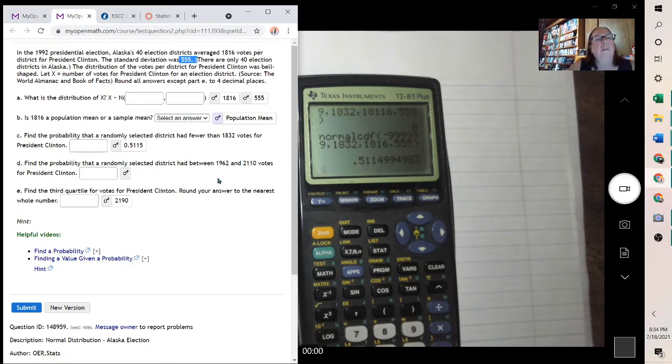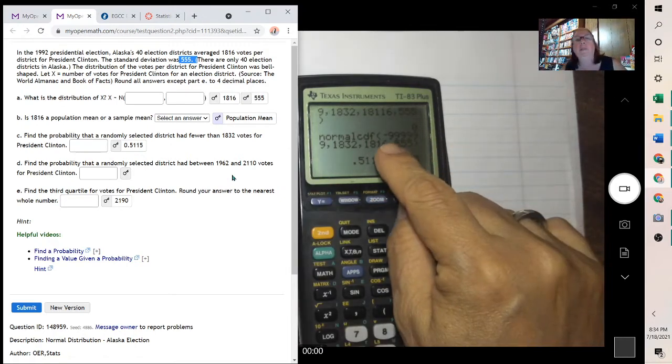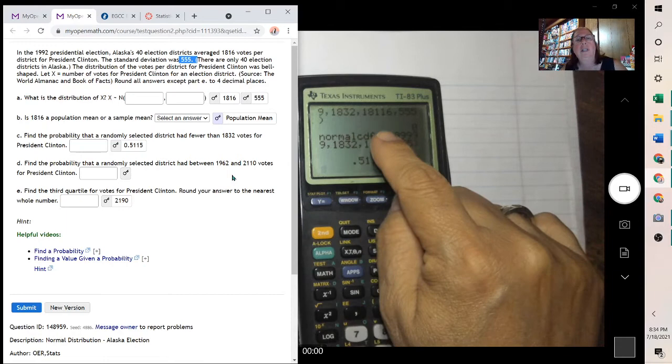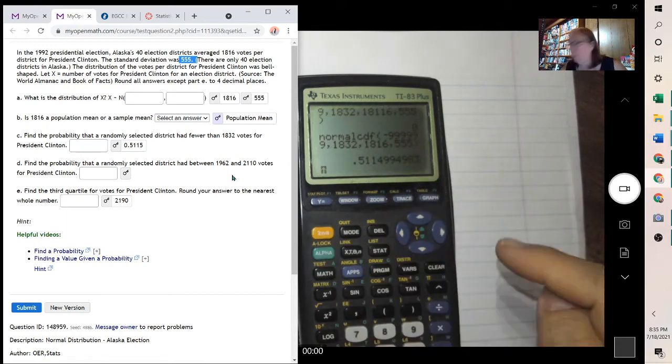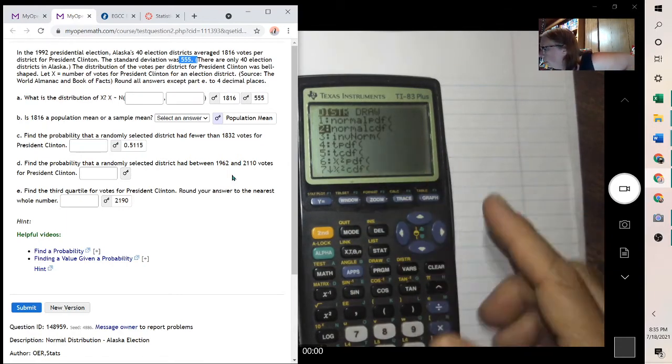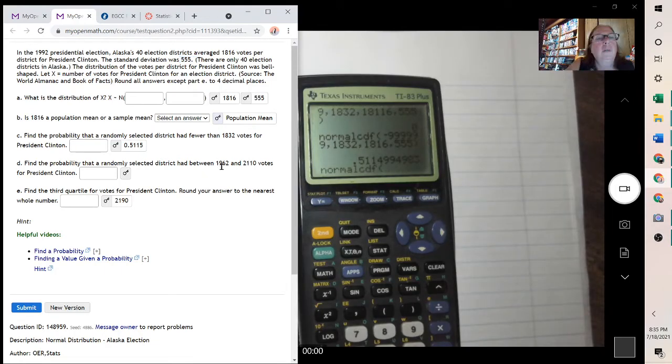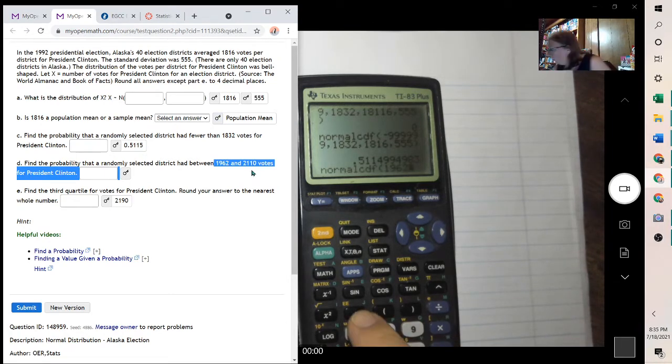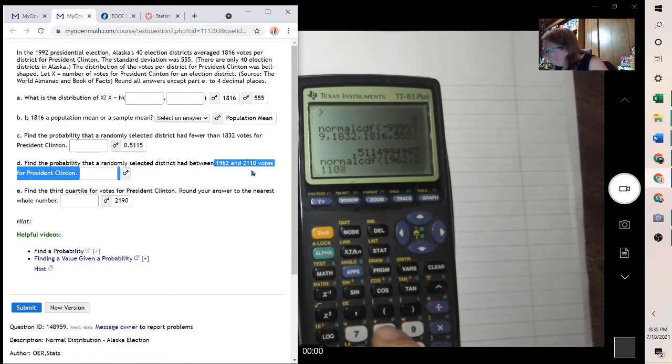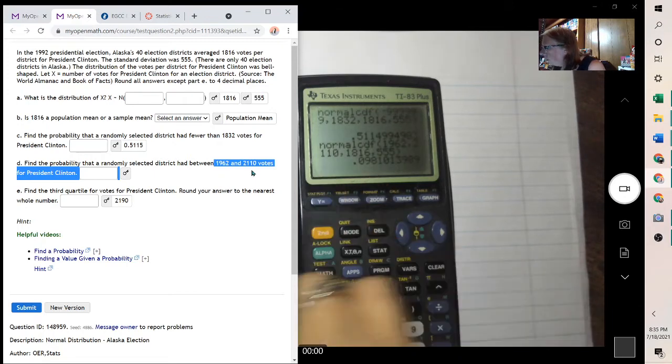For the next one, they gave us two values to be between, so we don't need the negative 9999. They're telling us what they want it to be between. So we go distribution down to the second one. And they want it between 1962 and 2110. So 1962, 2110, comma. And then the mean, 1816, and the standard deviation. So 0.098.